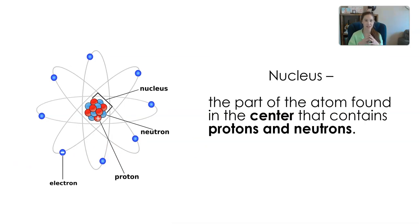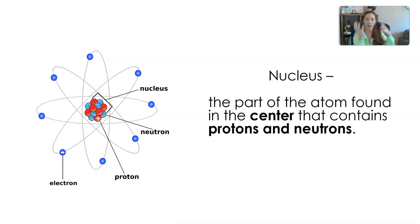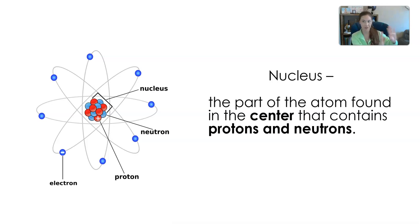The first thing we're going to talk about is the nucleus. The nucleus is the center of an atom. You might have heard of the term nucleus when we talked about our biology unit in terms of cells, but nucleus really just means the center of something. In this case, we're talking about the center of an atom, not the center of a cell. The protons and the neutrons are found in the nucleus.